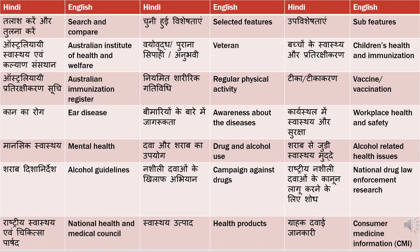'Vaya vruth', 'purana sipahi', and 'anubhavi' — these three words can all be translated as veteran. 'Purana sipahi' is used in the context of veterans from the army or military services. 'Anubhavi' refers to someone very experienced — a veteran in their field, like research. 'Vayovruddh' is used when referring to aged people.